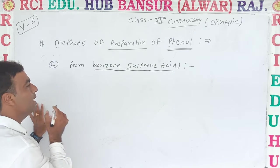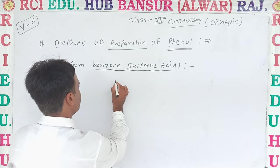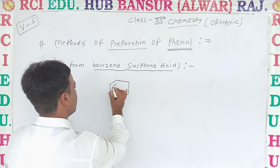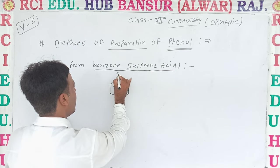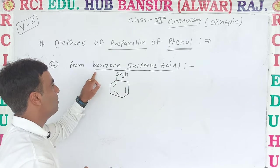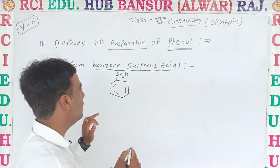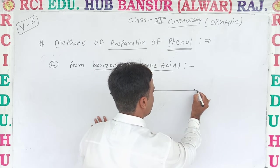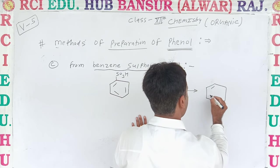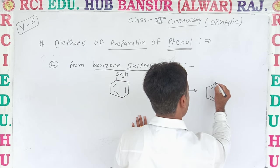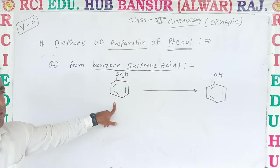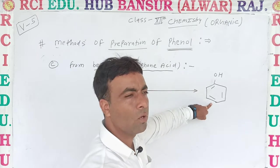Benzene sulfonic acid — look at the chemical reaction. From benzene sulfonic acid (SO3H), we have to carry out the formation of phenol. That is benzene sulfonic acid, and from it your product — phenol — will be formed.